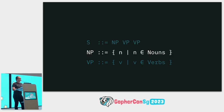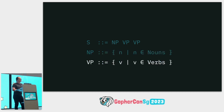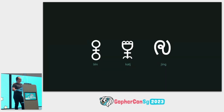A noun phrase is drawn from a set of known nouns. A verb phrase is drawn from a set of known verbs. Now we know what a language is, what a grammar is, and what a vocabulary is.